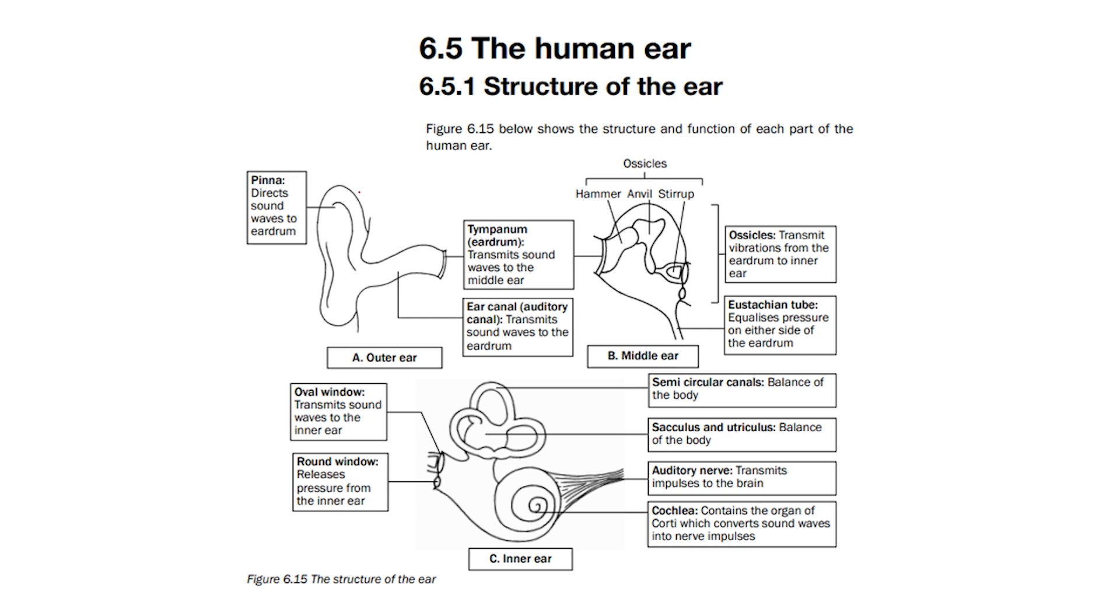In the outer ear, we have the pinna, which is this whole section here. The pinna directs sound waves into the auditory canal to the eardrum.